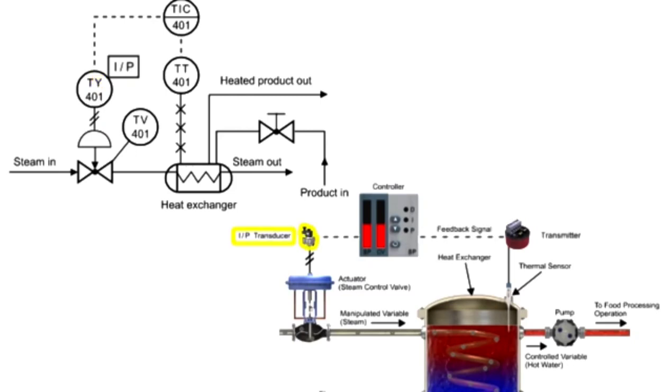The transducer converts an electronic signal to a pressure signal and is indicated by the square containing the letters I and P.